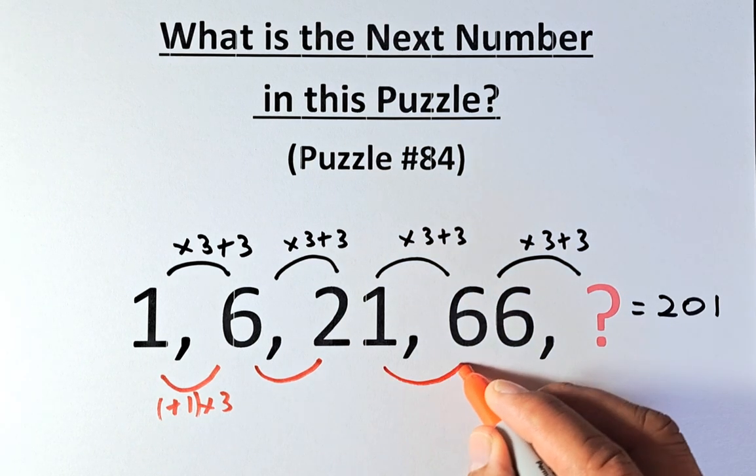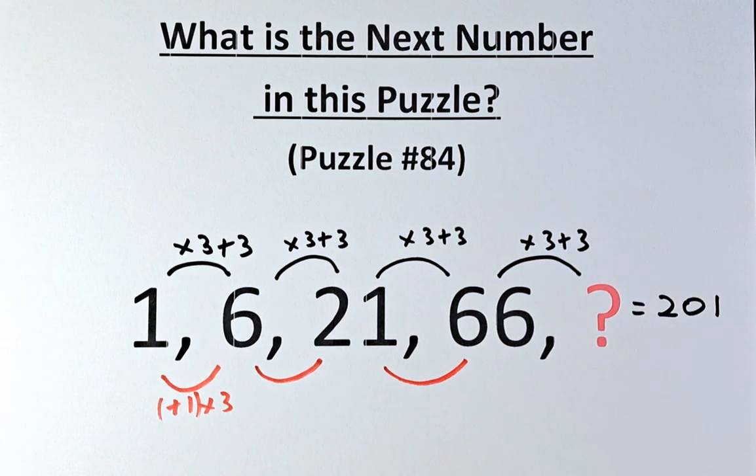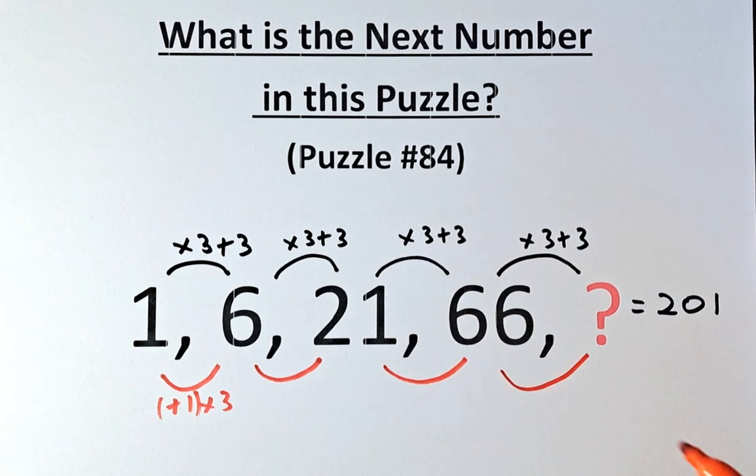And from 21 to 66 is the same. We add 1, so 21 plus 1 gives us 22, and 22 times 3 gives us 66.